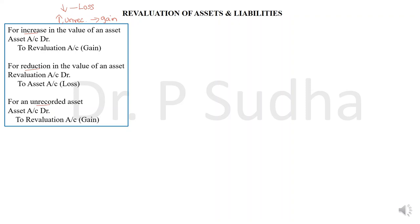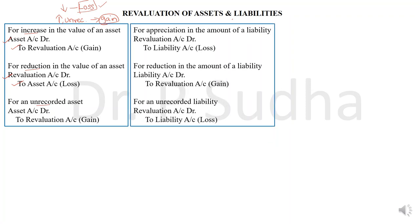The three different situations when we revalue an asset or liability are: we may come across an increase, a decrease, or an unrecorded asset. If the asset value has increased or we come across an unrecorded asset, it is a gain. If there is a reduction, it is a loss. If there is a loss, the journal entry is: Revaluation Account debit to Asset Account. If there is a gain, the entry is: Asset Account debit to Revaluation Account. Having understood revaluation of assets, we will move on to revaluation of liabilities.